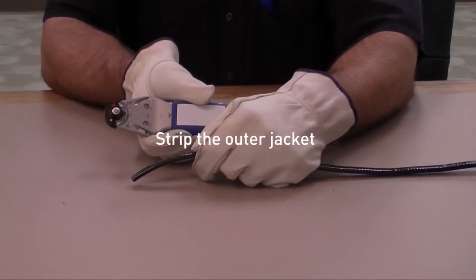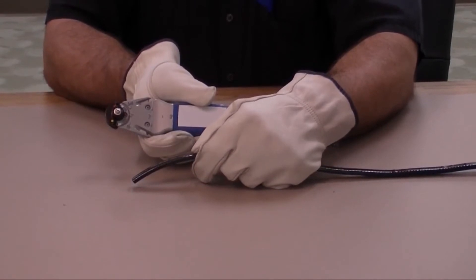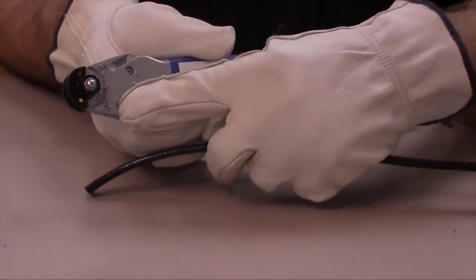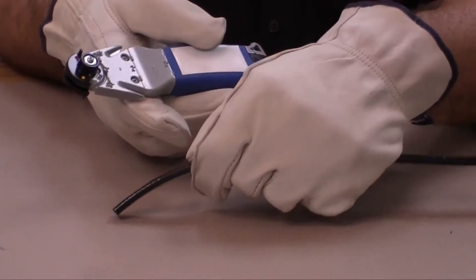To strip the outer jacket, step one: use the blade marked outer with the yellow dot to score around the outer jacket of the heating cable.